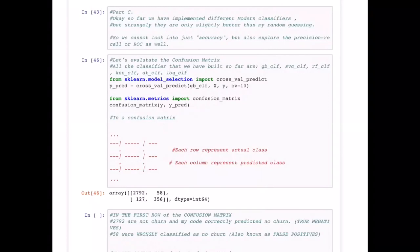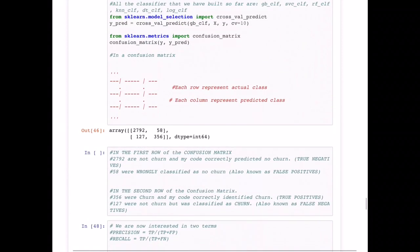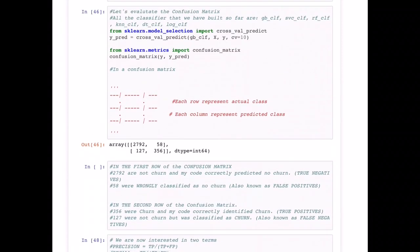As we can see here, we are using the classifier Gradient Boost, which we found to be the best classifier so far based on the accuracy. That gives us a starting point that we should start with Gradient Boost because it has the highest accuracy. We are going to calculate the confusion matrix for that particular classifier.